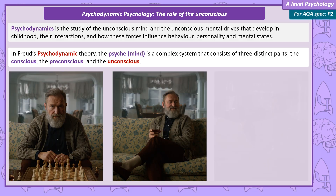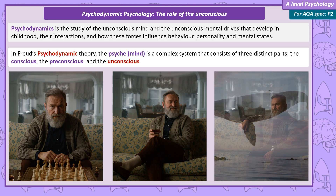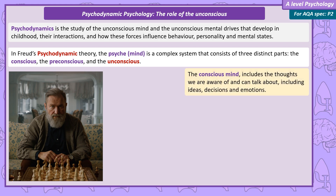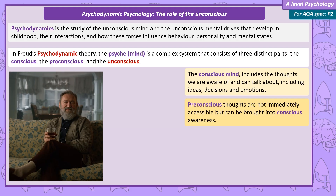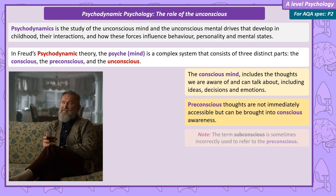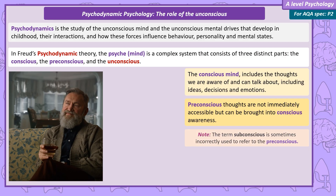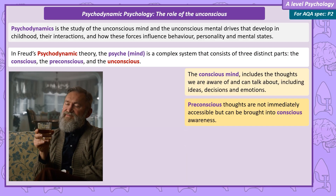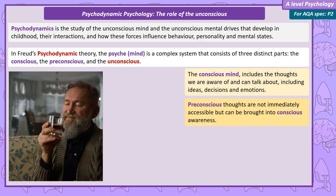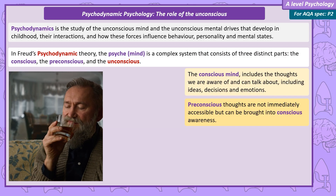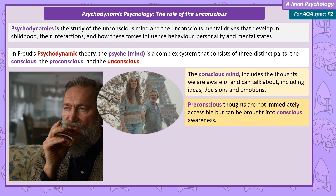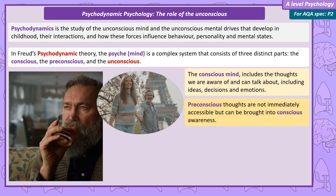The conscious mind, the pre-conscious, and the unconscious. The conscious mind is anything you're aware of. If you can talk about something, you're conscious of it. So this includes your ideas, your decisions and your emotions. Just below the level of consciousness there's the pre-conscious. This part of the psyche contains thoughts and memories that we're not currently consciously aware of, but we can bring these thoughts into conscious awareness. For example, you likely were not thinking about the capital of France, but now I've said it, you're conscious of Paris.